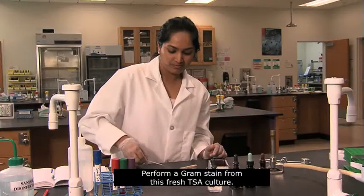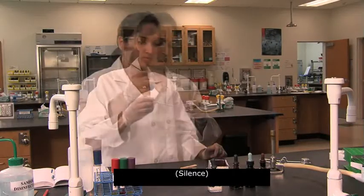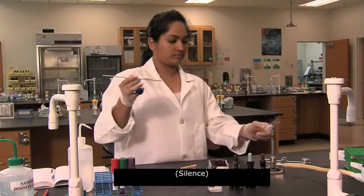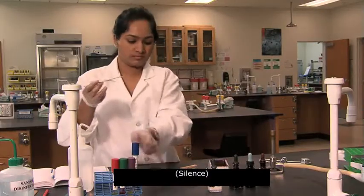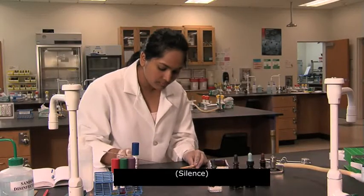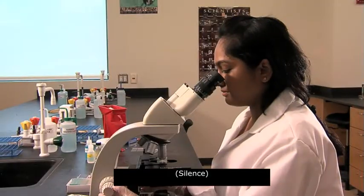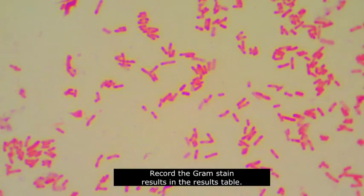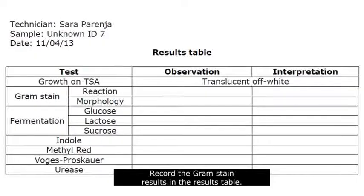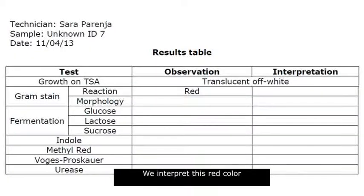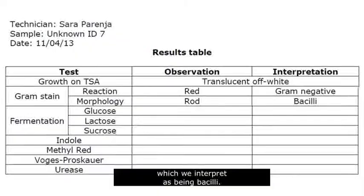Perform a gram stain from this fresh TSA culture. Record the gram stain results in the results table. Our unknown stained red, so red is our observation. We interpret this red color to mean our unknown is gram negative. Similarly, the unknown appeared to be rods, which we interpret as being bacilli. Record and interpret your own results for your unknown.